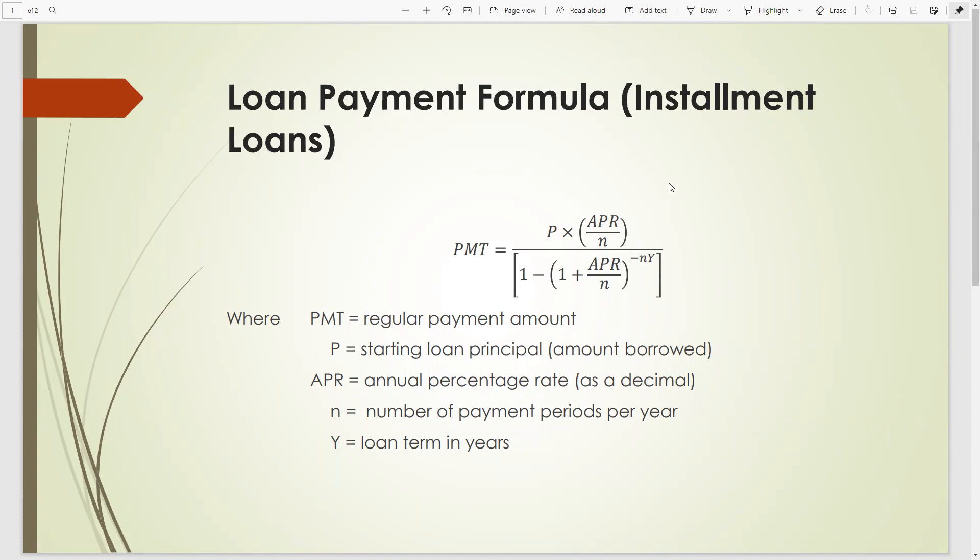And we see, the numerator gives principal times annual rate of time period, payment period each year, divided by 1 minus 1 plus a count into the negative n y. And this payment each year, and the y is number of years. So simply the power is negative of total payment, total amount of payment.